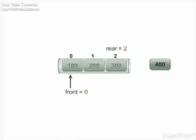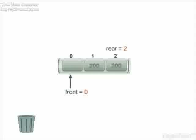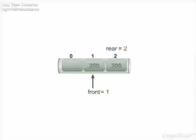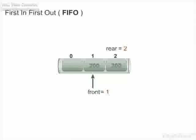After this, let us delete an element from the queue. The number 100 is deleted from the queue because it is at the front. Thus, front gets shifted to the next position. We have seen that the element entered first is deleted first, so a queue is a First In, First Out — that is, FIFO — list.